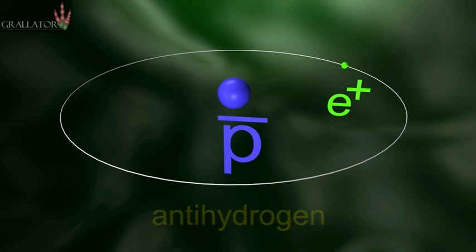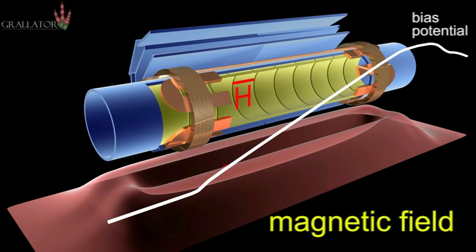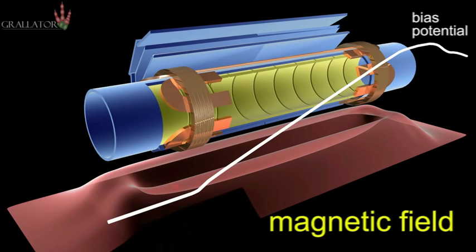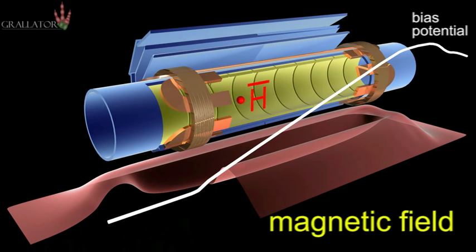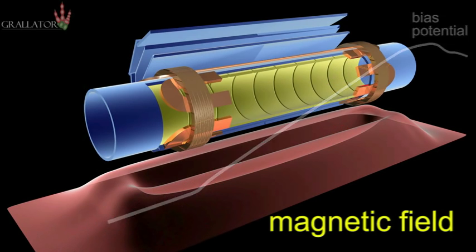So if that antihydrogen is formed and it's slow enough, it will stay in this magnetic bathtub. You can see it at the bottom. This is the potential that's used to hold the antihydrogen atom. So if it's less than 0.5 Kelvin above absolute zero, it'll stay there.